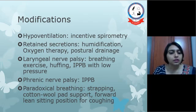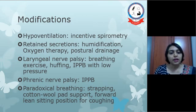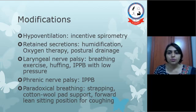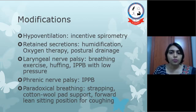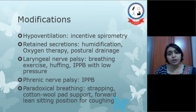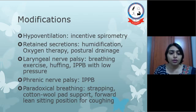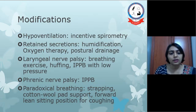If there is phrenic nerve palsy, which is again a complication of pneumonectomy causing paralysis of the diaphragm, IPPB can also be given. For paradoxical breathing, which may be a complication of thoracoplasty, we can use strapping, cotton wool pad support, and forward lean position for coughing — all of which help reduce paradoxical breathing.